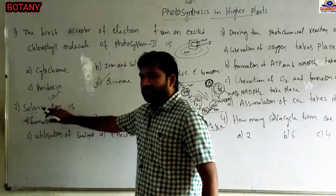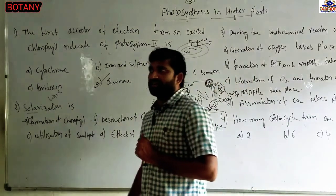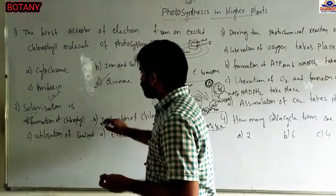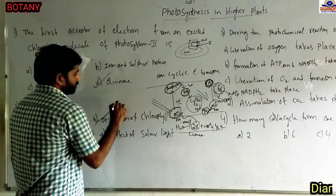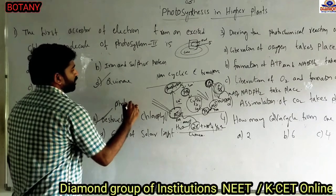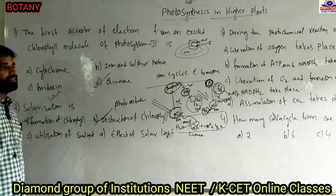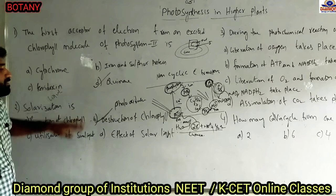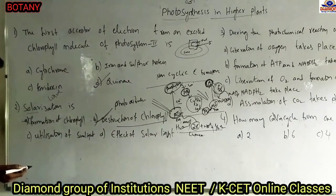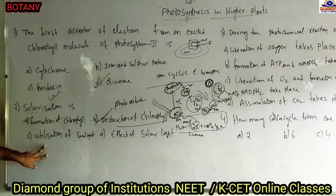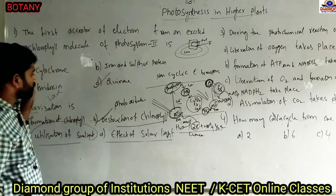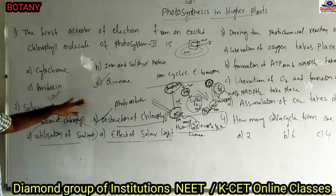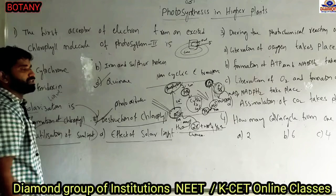Different intensities of light are present in solar conditions. High intensity of light falling on chlorophyll pigments causes their destruction, which is also called photo-oxidation — that is, distortion of chlorophyll pigments. By high intensity of light, chlorophyll pigments are damaged or become inactive. Utilization of sunlight and effect of solar light — these do not define solarization. The destruction of chlorophyll molecules only is called solarization. Answer is B.